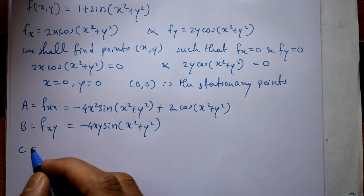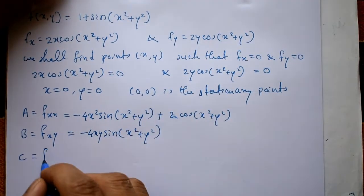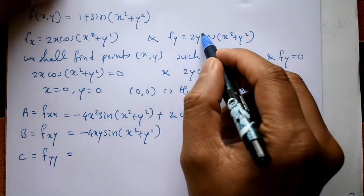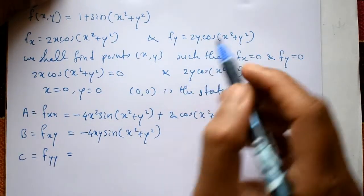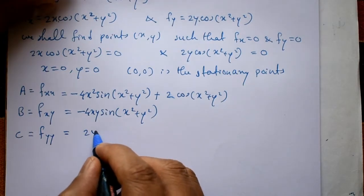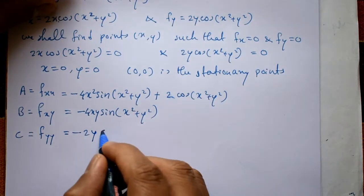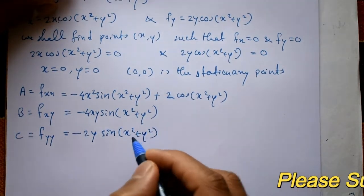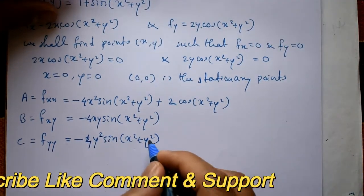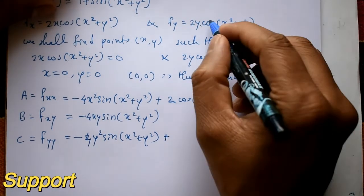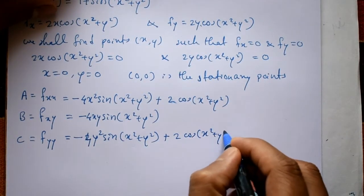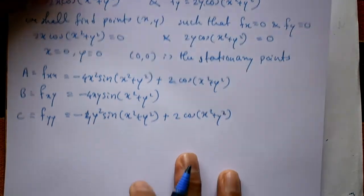For C = ∂²f/∂y², differentiate 2y · cos(x² + y²) again with respect to y using the product rule: C = −4y² · sin(x² + y²) + 2cos(x² + y²).